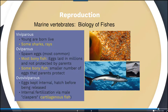In terms of reproduction, there are three different forms in fish. Viviparous reproduction is where the young are born live — this includes sharks and rays. Oviparous reproduction involves the spawning of eggs into the external environment; this is the most common form. Most bony fish lay eggs in the millions with little parental protection, though some bony fish do provide parental care — as in Finding Nemo, where clownfish protect their eggs. Ovoviviparous reproduction is a combination: eggs are kept internally, hatch before being released, and internal fertilization occurs via a structure called claspers.